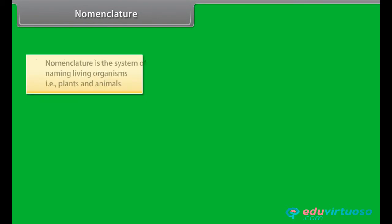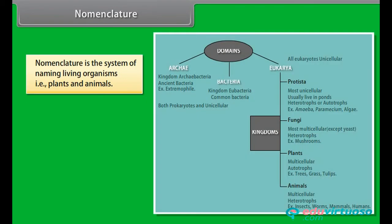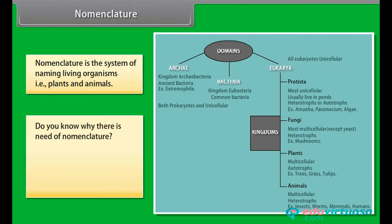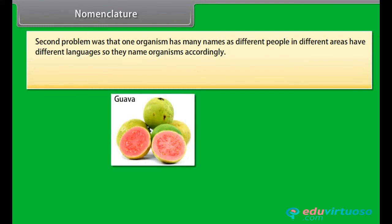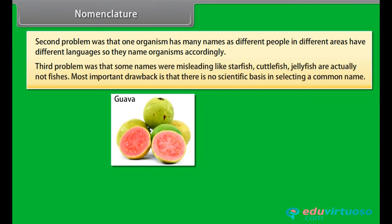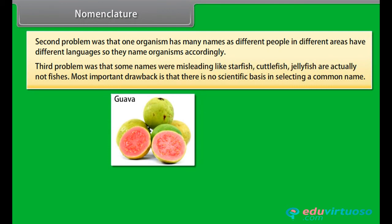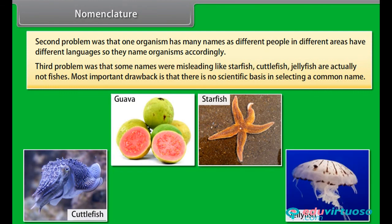Nomenclature is the system of naming living organisms, that is plants and animals. Common names cover only localized organisms and do not cover plants and animals of entire earth. A second problem is that one organism has many names, as different people in different areas have different languages. A third problem is that some names are misleading — like starfish, cuttlefish, jellyfish are actually not fishes. Most importantly, there is no scientific basis in selecting a common name.